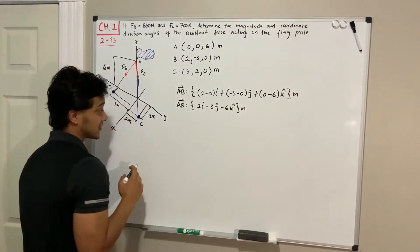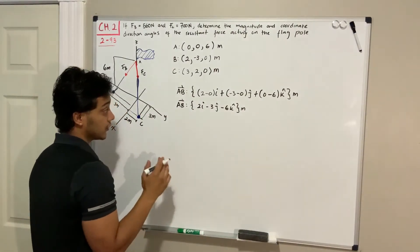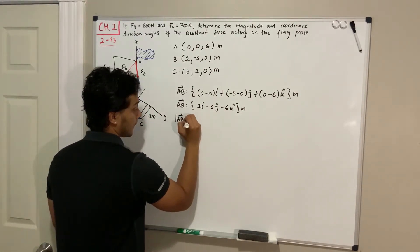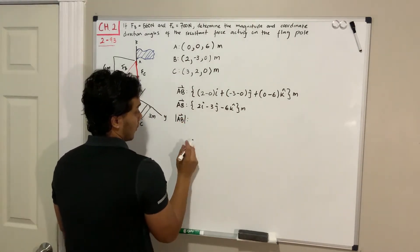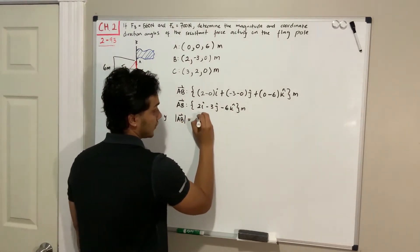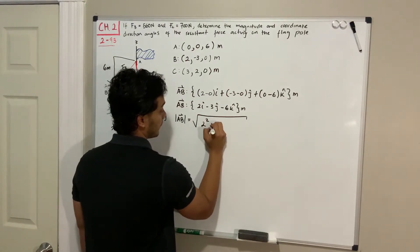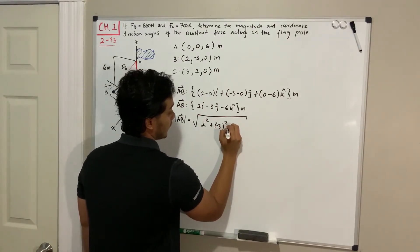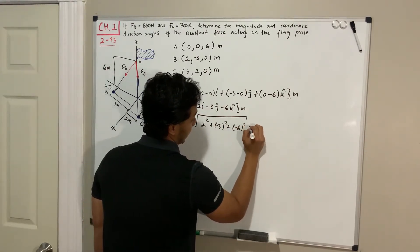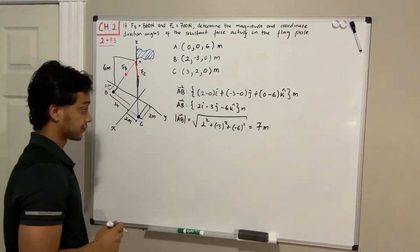Now we need the unit vector so we can decompose force B. To find the unit vector we first need the magnitude of vector AB. Applying the Pythagorean theorem: the square root of 2 squared plus negative 3 squared plus negative 6 squared gives a total of 7 meters.